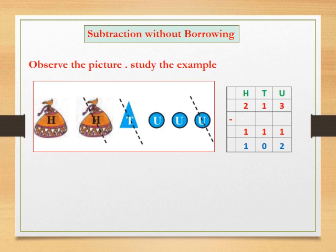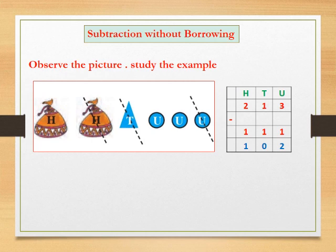Previously we learned how to arrange 2-digit numbers and subtract. Now we learn how to arrange 3-digit numbers and subtract. Here we see a picture. In this picture we see 2 purses of 100, 1 ten and 3 units. First, we write the number in columns: hundreds, tens and units. So we write 200, 1 ten and 3 units.